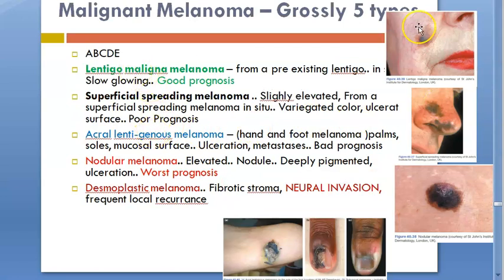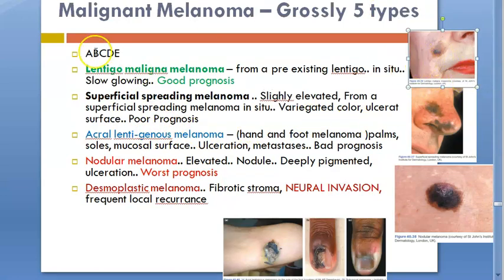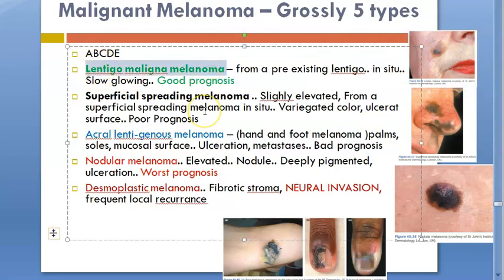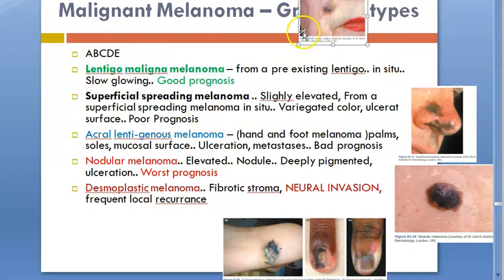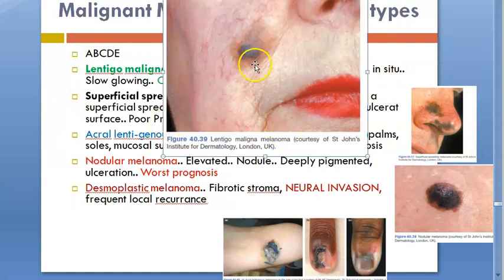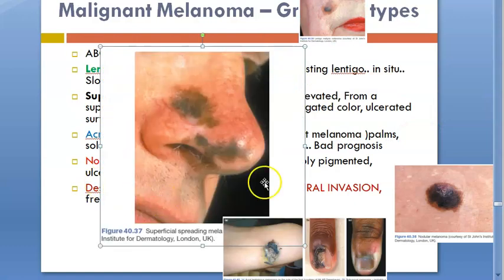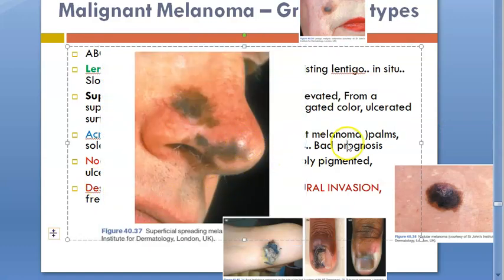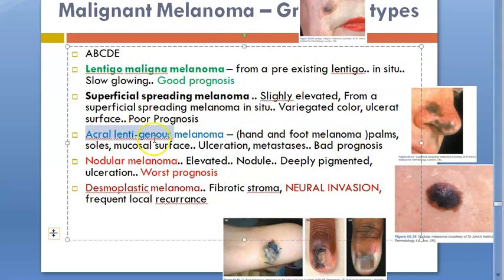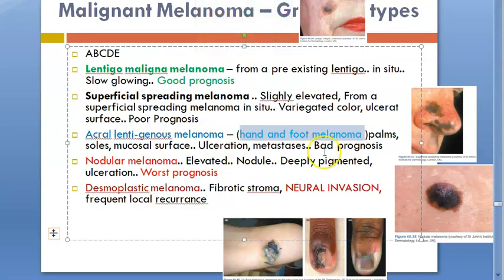Now, grossly, let us look at the types of malignant melanoma. You have lentigo malignant melanoma, which has good prognosis. This arises from a pre-existing lentigo — in situ. Then you have superficial spreading melanoma, which is slightly elevated. And then you have acral lentiginous melanoma — this is hand and foot melanoma. This is rare but has bad prognosis.